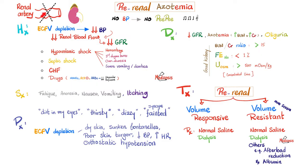Diagnosis: GFR is low with azotemia — elevated BUN and creatinine — and oliguria or anuria, though that's not required. As long as it's still pre-renal, the kidney is considered good: the BUN-to-creatinine ratio is normal, FENa is normal, and urine osmolality is normal, meaning the kidney can still concentrate the urine.